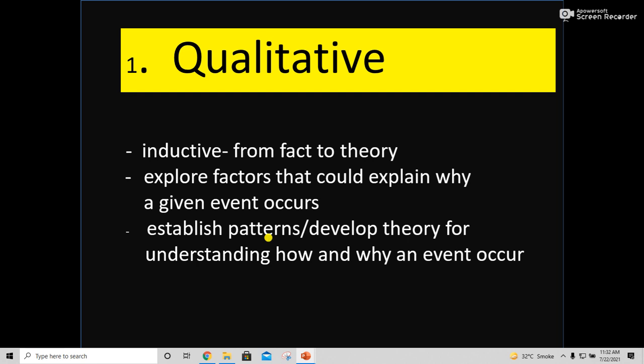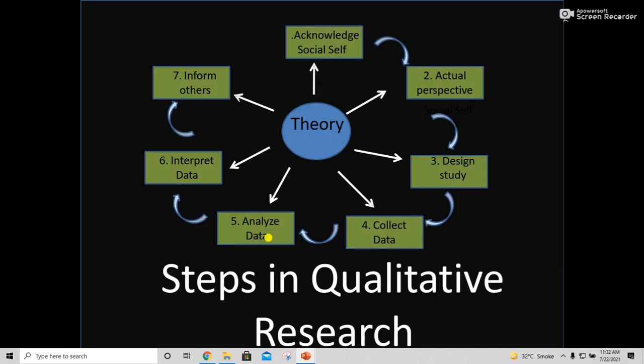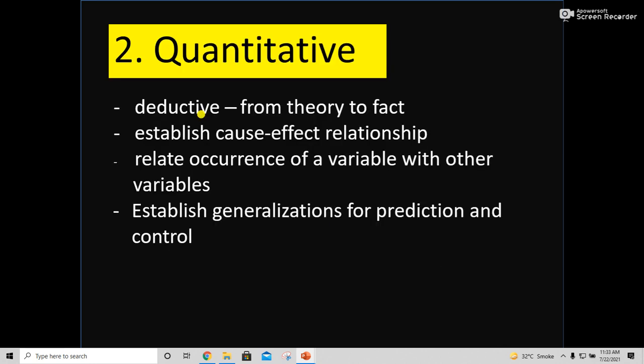Qualitative research is inductive. We come from theory to explore the factors that could explain why a given event occurs, establish patterns, and develop theory for understanding how and why an event occurs. The steps in qualitative research are: first, acknowledge the social self; second, actual perspectives; third, design study; fourth, data collection process; fifth, analyze the data; sixth, interpretation of the data; and then inform others from theory to fact.